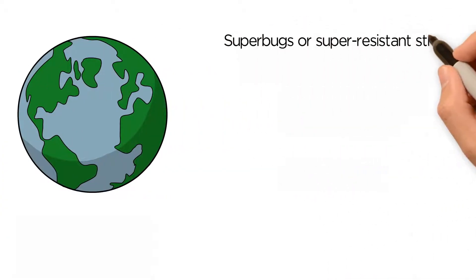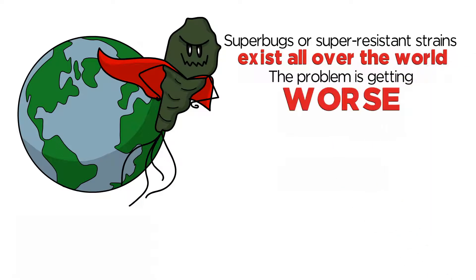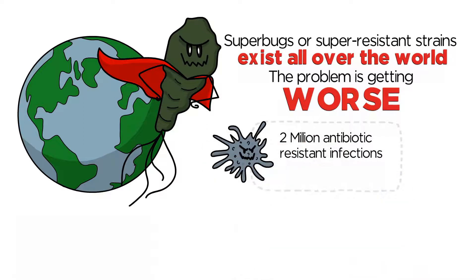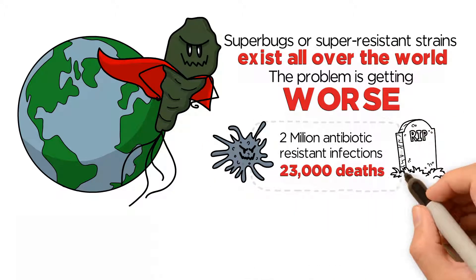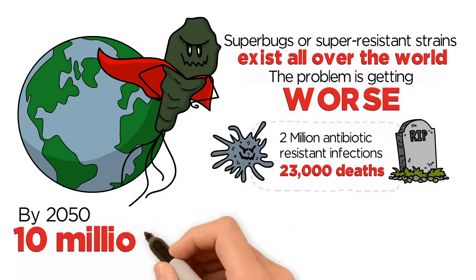Superbugs, or super-resistant strains, exist all over the world. And the problem is getting worse. Currently, there are 2 million antibiotic-resistant infections in the U.S. with 23,000 deaths due to these infections. By the year 2050, 10 million will have died due to infection.